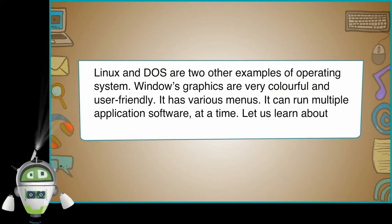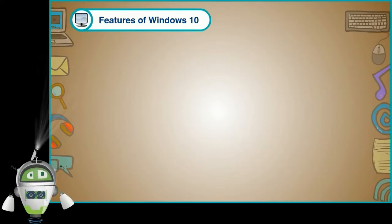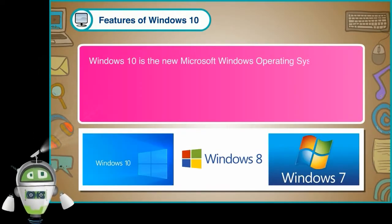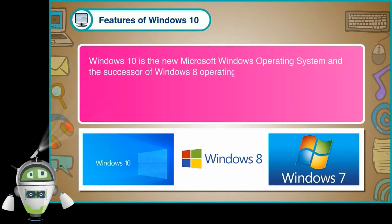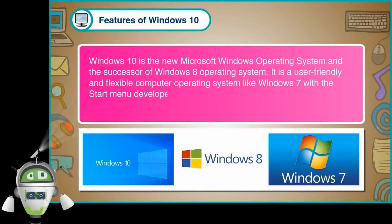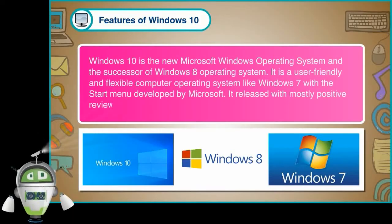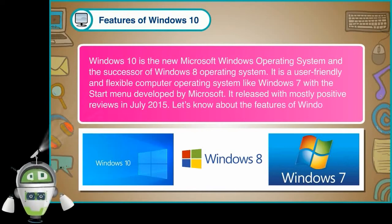Let us learn about the features of Windows 10. Windows 10 is the new Microsoft Windows operating system and the successor of Windows 8 operating system. It is a user-friendly and flexible computer operating system like Windows 7, with the start menu developed by Microsoft. It released with mostly positive reviews in July 2015. Let's know about the features of Windows 10.